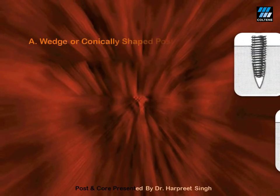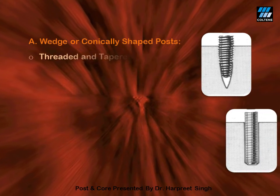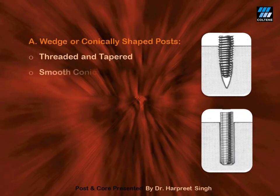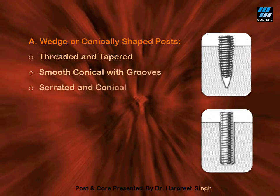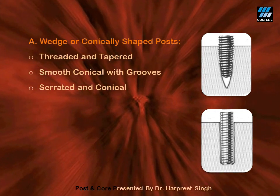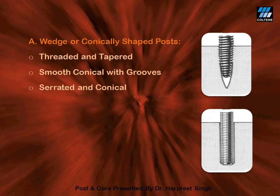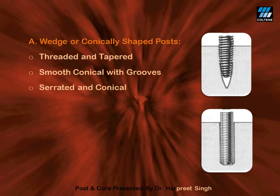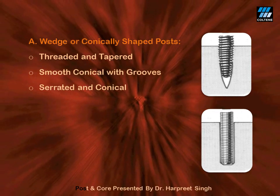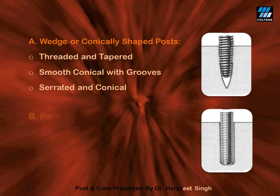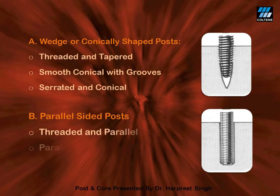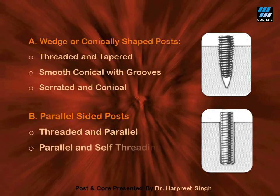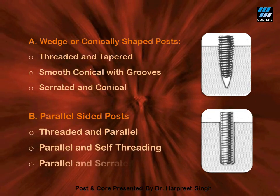According to shape, a post can either be tapered or parallel, each having its own advantages and limitations. A tapered post preserves radicular dentine during post space preparation as both the post and the canal are tapered, but its retention may not be as great. On the other hand, although the retention of parallel posts is excellent, their placement requires excessive removal of dentine in the apical part of the root.